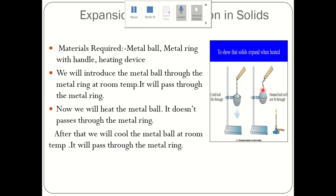Why does it not pass? Because the size of the metal ball has increased and it cannot pass through the metal ring. After that, we will cool the metal ball at room temperature. When cooled, it will decrease in size and pass through the metal ring again. These experiments show that solids expand on heating and contract on cooling.